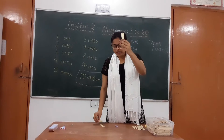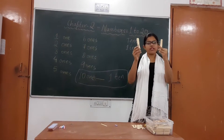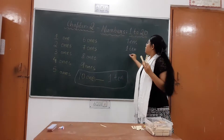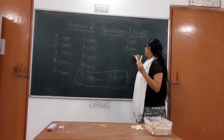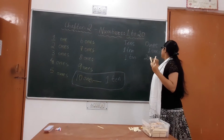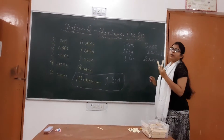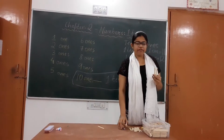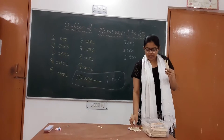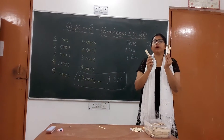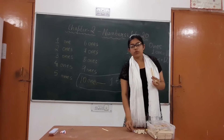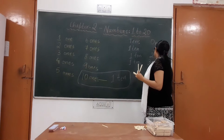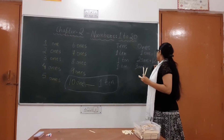I have 1-ten and 2-ones. So, which number is this? 1-ten and 2-ones makes 12. Now, I have again 1-ten and 3-ones. So, 1-ten and 3-ones makes 13.